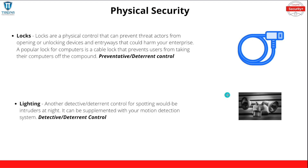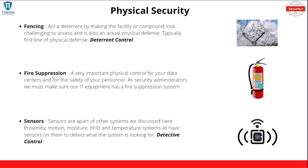Locks — whether that be specific computer locks or locks to your actual office area — those are going to be preventative and deterrent controls. Lighting is another detective and deterrent control for spotting would-be intruders at night or in dark areas of your compound or data center.